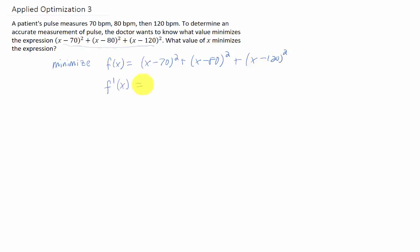To find a critical point, we take the first derivative. For each one of these terms, the first derivative involves the power rule. We multiplied by 2 and reduced the power to 1. You may be wondering what happened with the chain rule. Well, we did it. We had to take the derivative of x minus 70, but that derivative is just 1, so we're multiplying by 1. Same with x minus 80, same with x minus 120. So that is our first derivative.